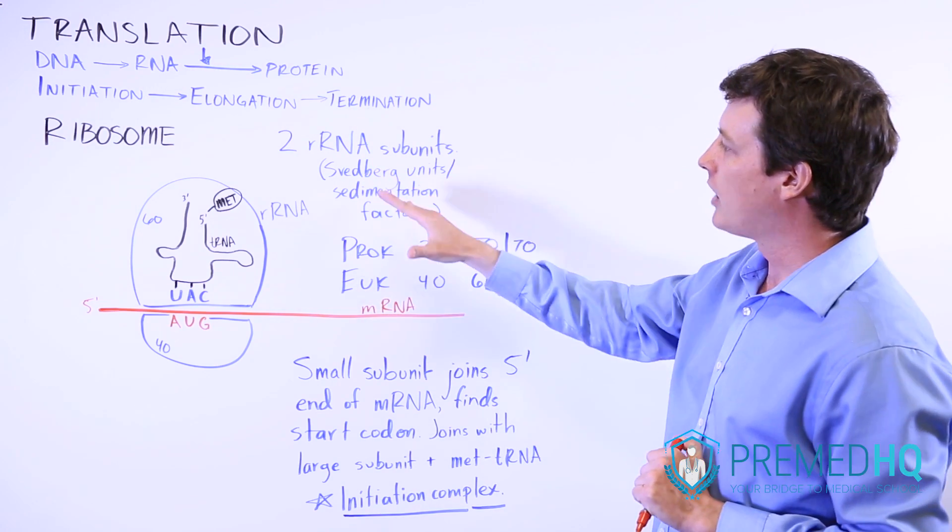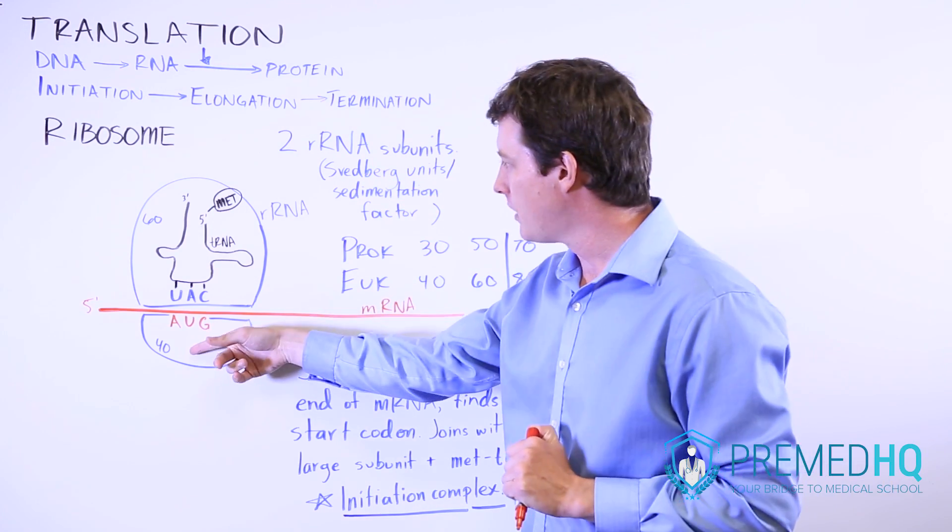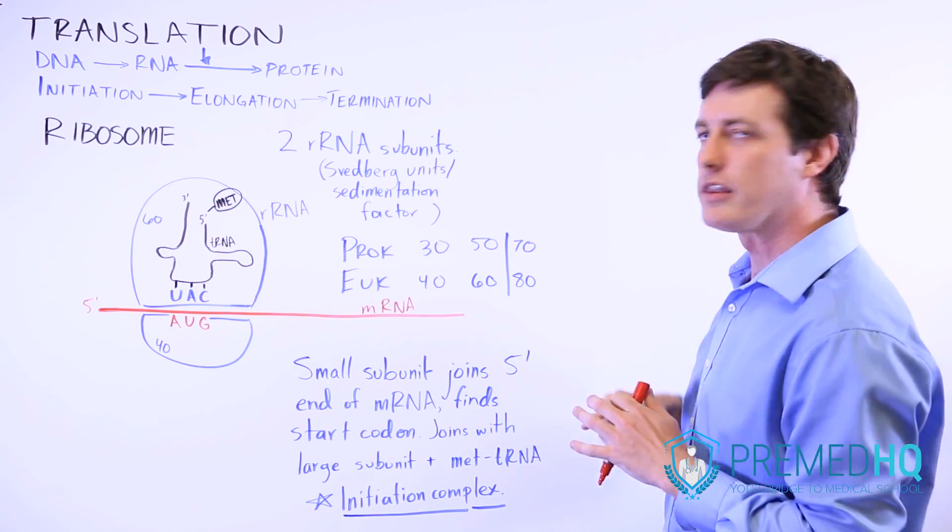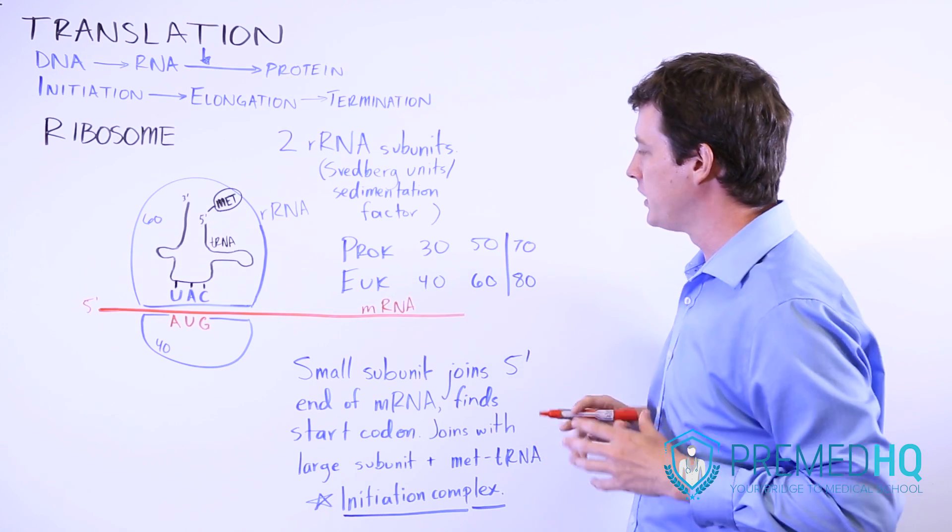But ultimately, with a ribosome, there's going to be a small subunit and a larger subunit, and those will combine into a ribosome with a given size, a given Svedberg unit.